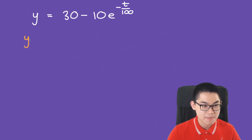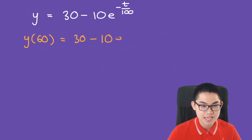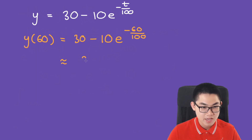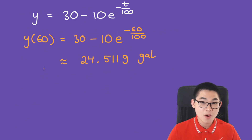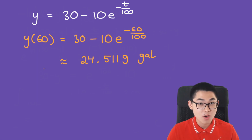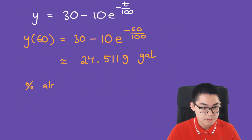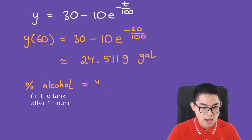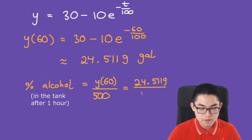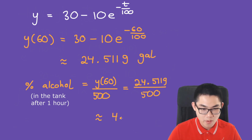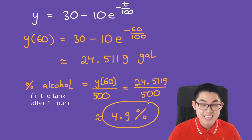The problem wants the amount of alcohol after one hour, so y(60) = 30 − 10e^(−60/100) ≈ 24.5119 gallons of alcohol. The percentage of alcohol after one hour is y(60)/500 = 24.5119/500, which is approximately 4.9%. That is our final answer.